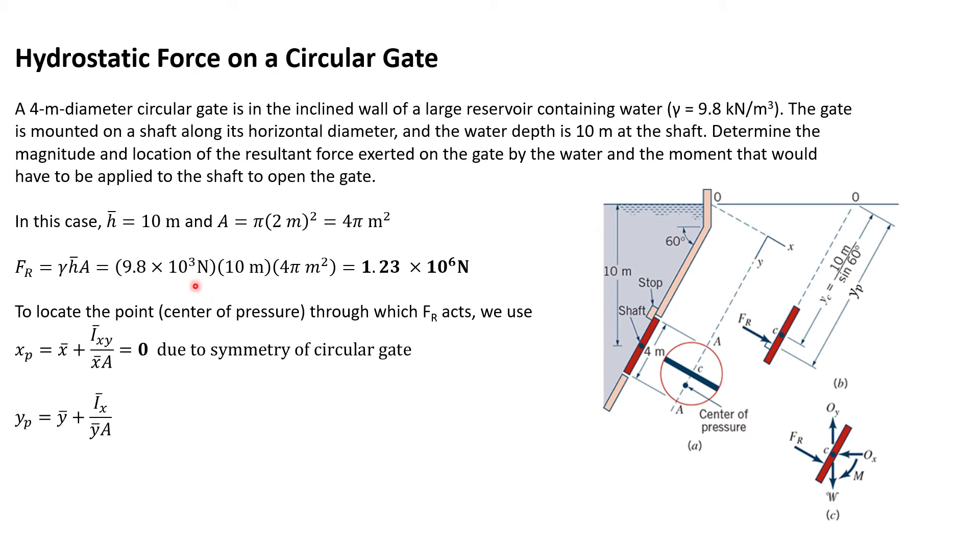Now in this case, what is h̄? h̄ is the distance from the surface of the water down to the center of the shaft, that's 10 meters. The area is πr², with a 2 meter radius, so it's π times 2 meters squared, or 4π meters squared.